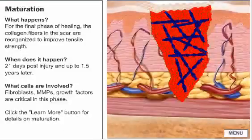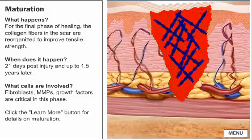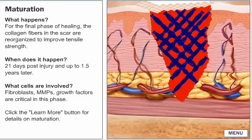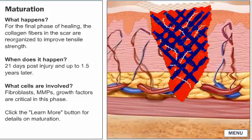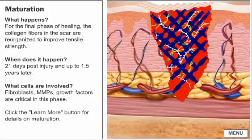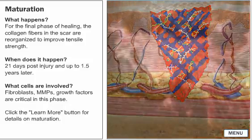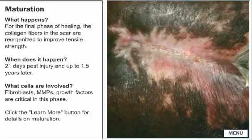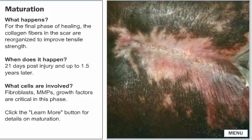During the maturation phase, the collagen fibers reorganize, remodel, and mature, gaining tensile strength. Collagen fibers, proteoglycans, and fibronectin are rearranged and redistributed. The scar becomes less cellular and gains tensile strength. However, this tissue will always be at risk for breakdown because its tensile strength is less than that of uninjured skin.